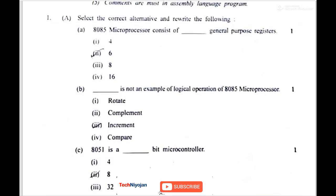The first question was 8085 microprocessor consists of dash general purpose register. So its answer is 6. As you know, B, C, D, E, H and L.